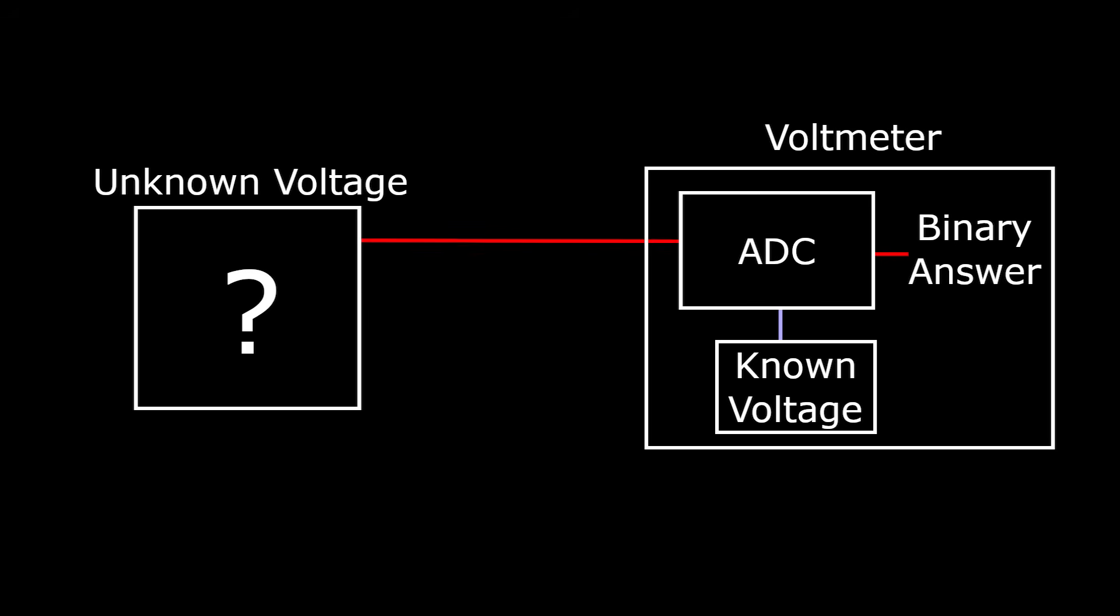If we used a bad voltage reference which drifted around a bunch and wasn't accurate, then that inaccuracy would creep into our measured results. Basically, the voltmeter can only be as accurate and precise as this voltage reference allows.